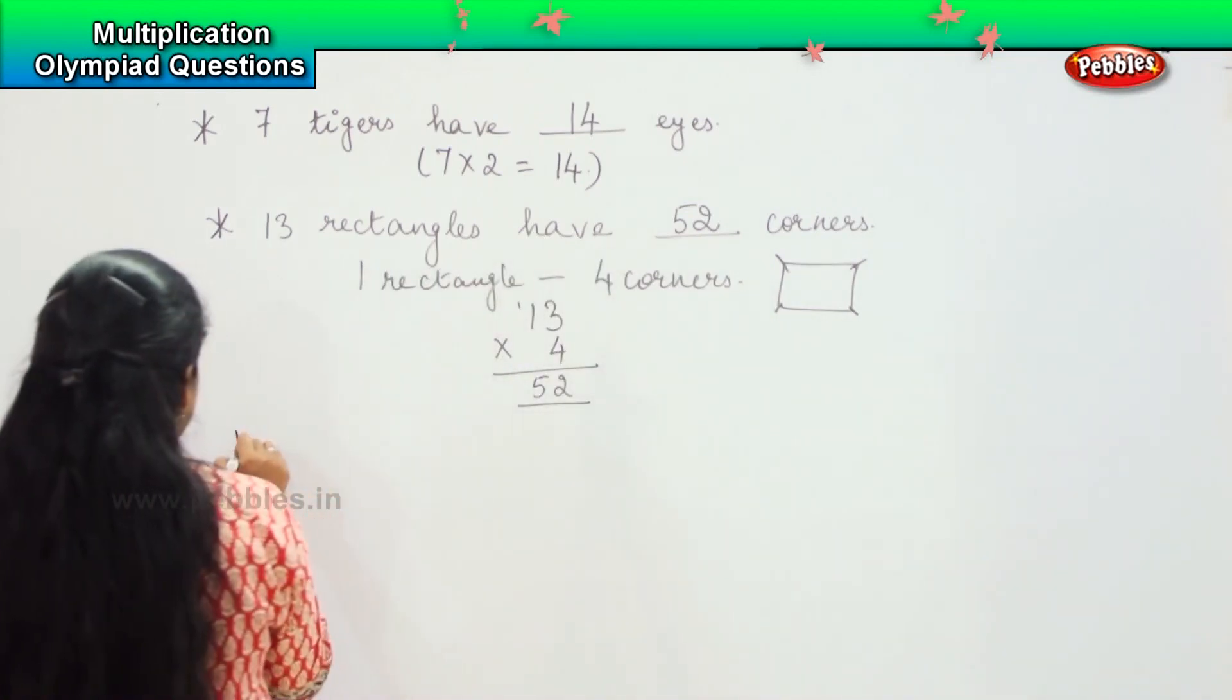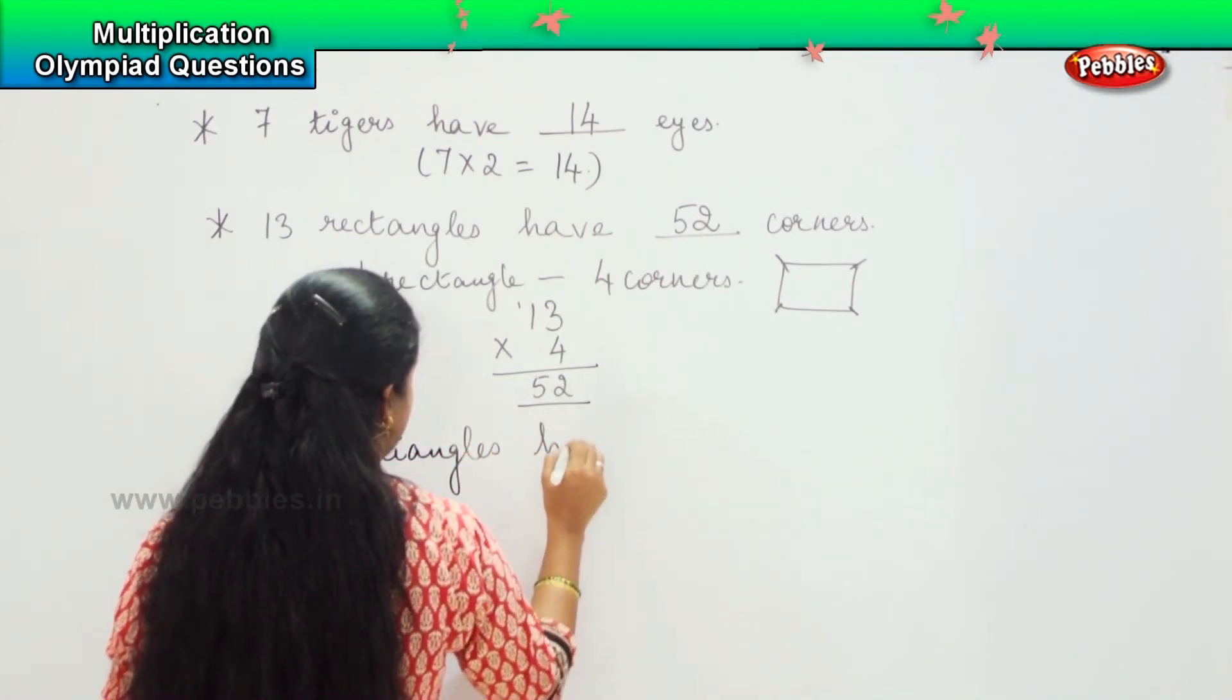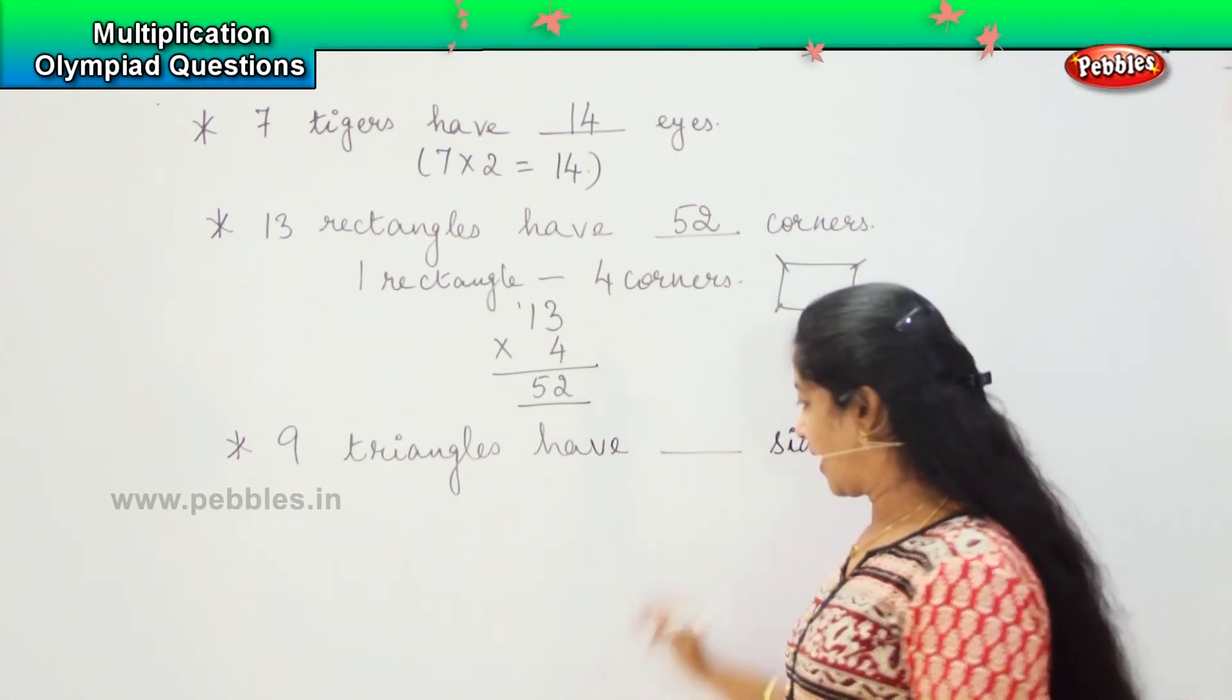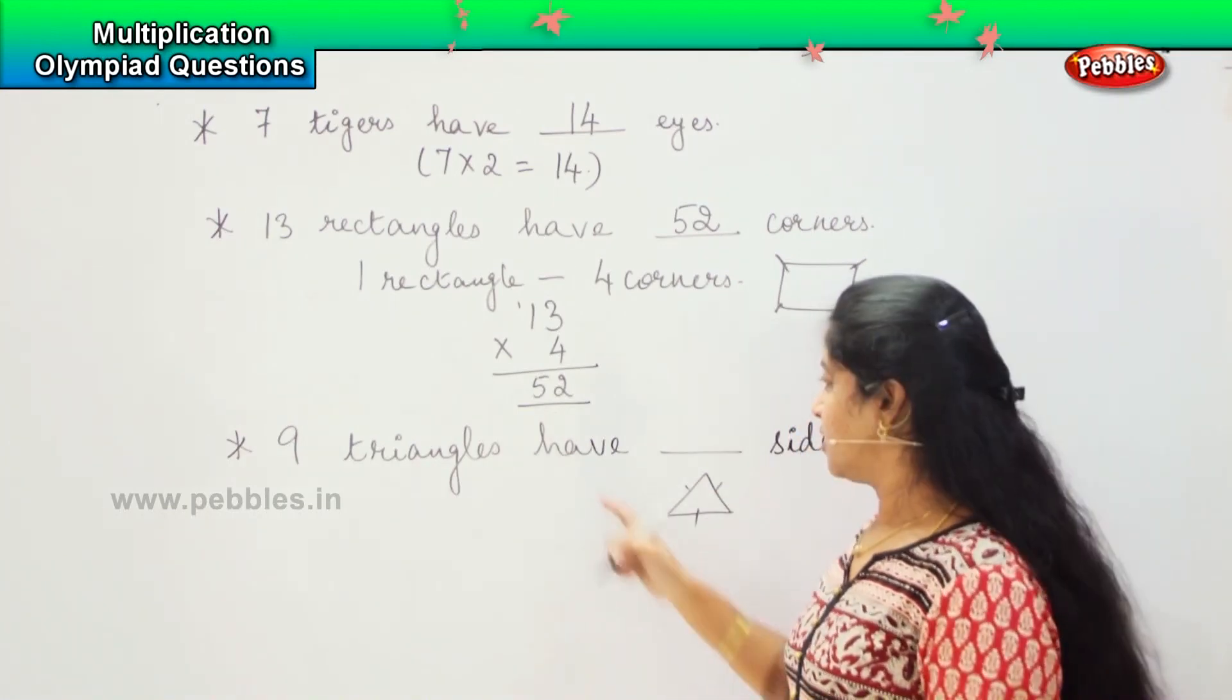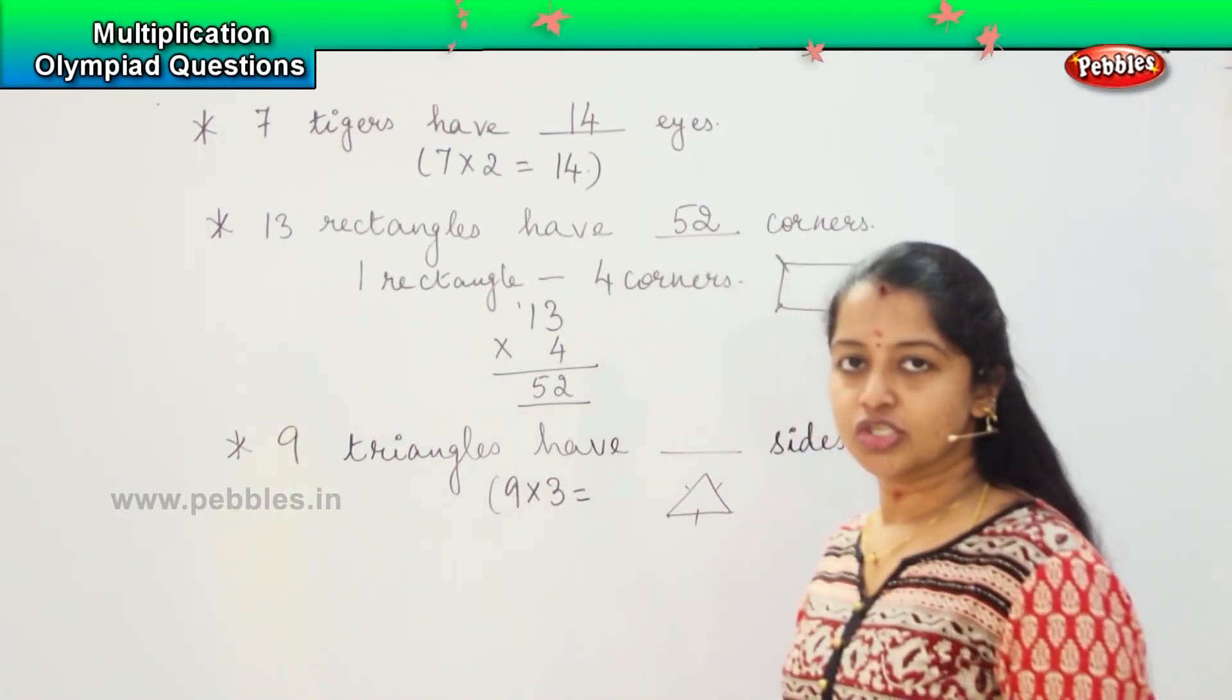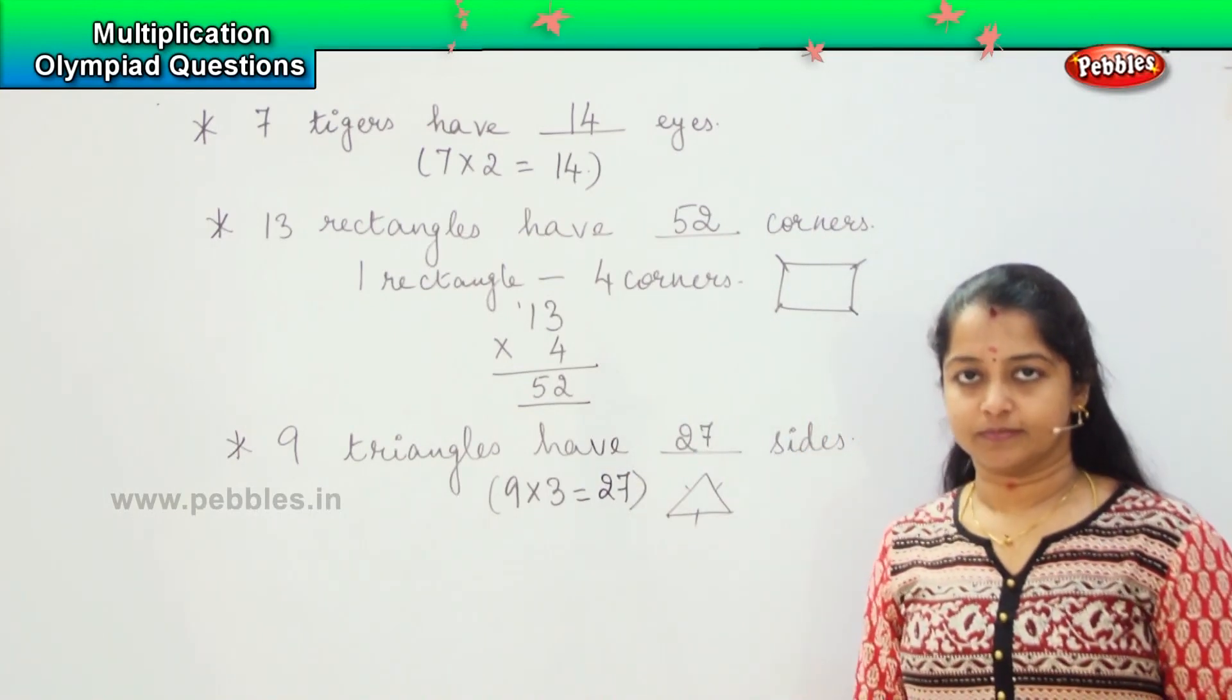Next question. 9 triangles have dash sides. How many sides does one triangle have? 1, 2, 3, right? So how many sides do 9 triangles have? So it means that 9 into 3. How much is 9 into 3? Very good. It is 27. So my answer is 27. Clear?